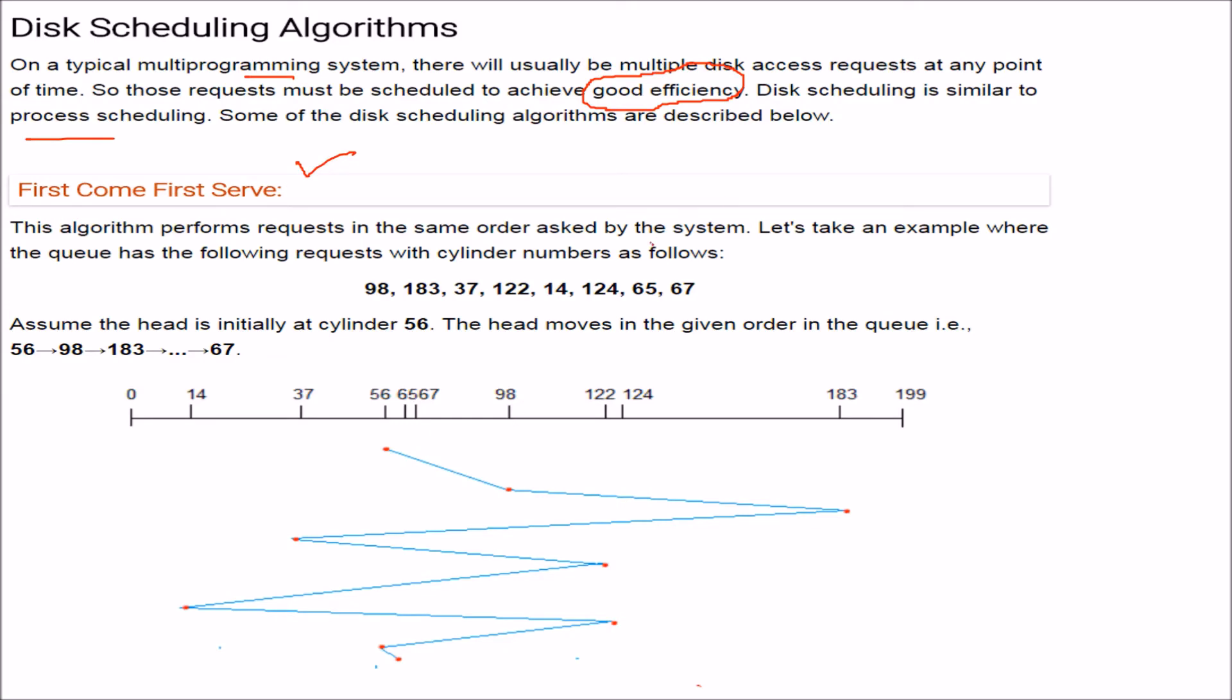First Come First Serve. This algorithm performs requests in the same order as asked by the system. So let us take an example. The queue has the following request with the cylinder numbers like this. These are the cylinder numbers.